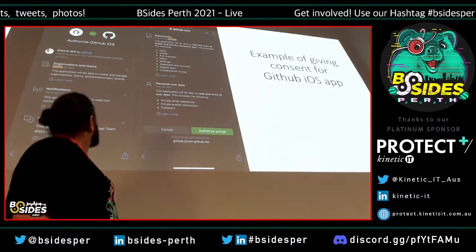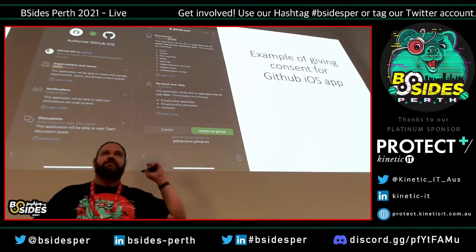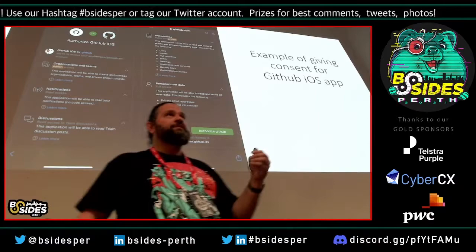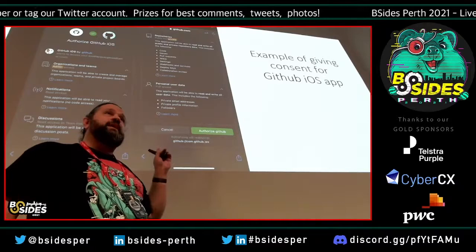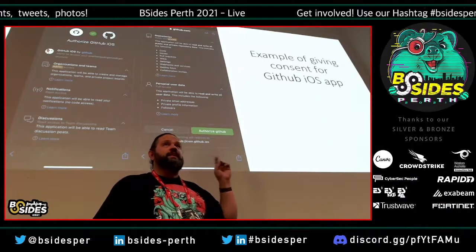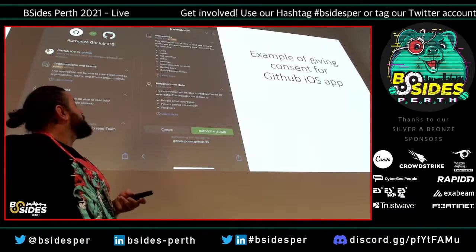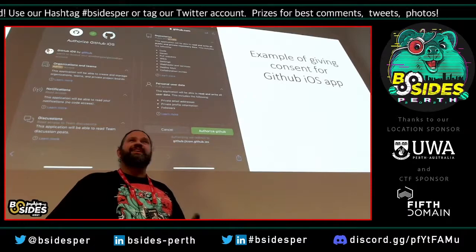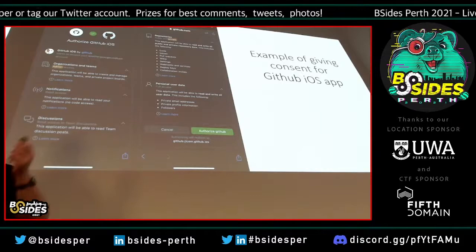This is an example of me signing into GitHub on my iPhone using my GitHub account. It's my account and my phone, but I'm still giving permission to the GitHub iOS app to act on my behalf — so when I open my phone, I don't need to type in my username and password or do two-factor authentication. It just has the permissions saved. Looking at the permissions, it's actually the whole account.